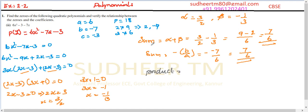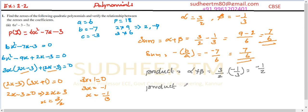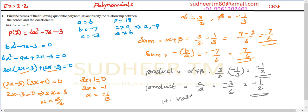Now for the product: alpha times beta equals 3/2 into minus 1/3, which equals minus 1/2 (the 3s cancel). Also, the product of zeros by formula equals c by a, where c is minus 3 and a is 6, giving minus 1/2. Both methods agree, so hence verified.